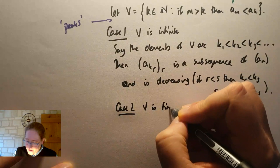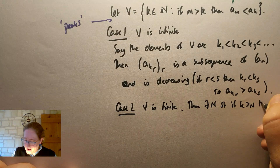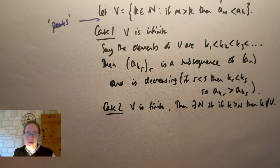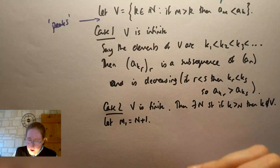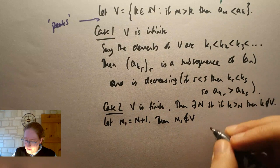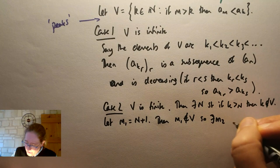Let me just create myself a little bit more space on my page here. So case two is going to be the case that V is finite, and that means that there's a largest element. So then there exists an n such that if k is greater than n, then k is not in V. And what I'm going to do is now kind of just build the sequence, because if we let m_1 be like n plus 1, say, then m_1 isn't in V.